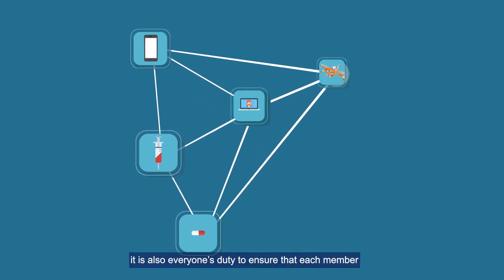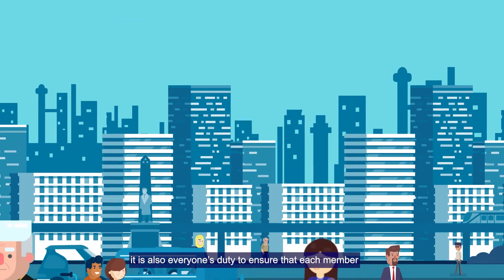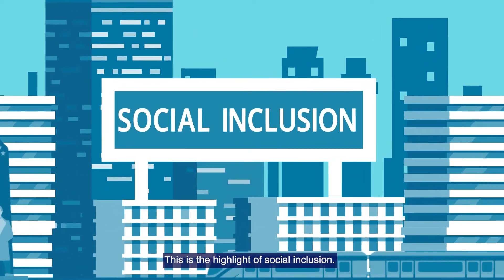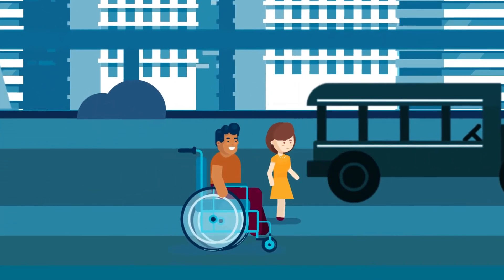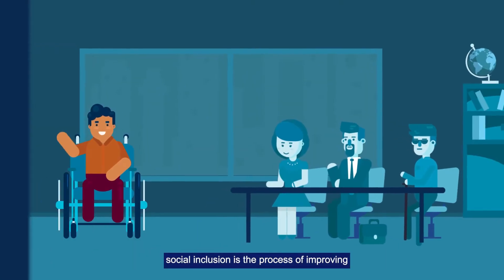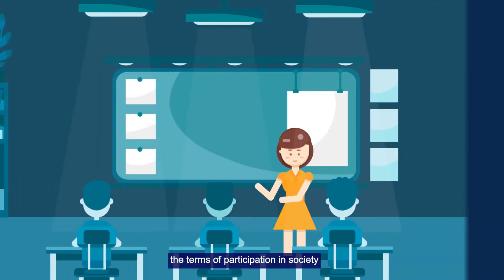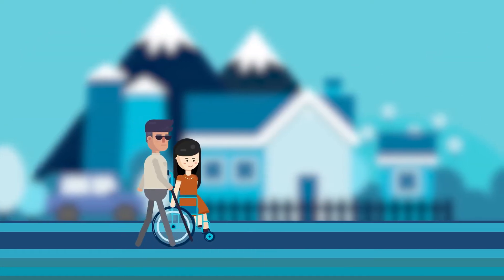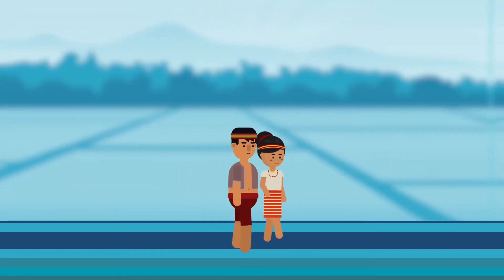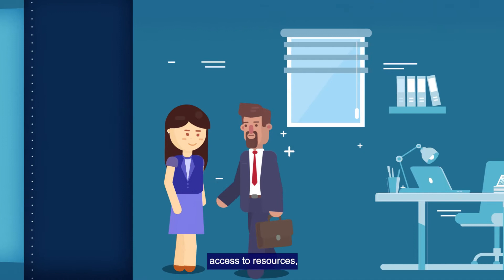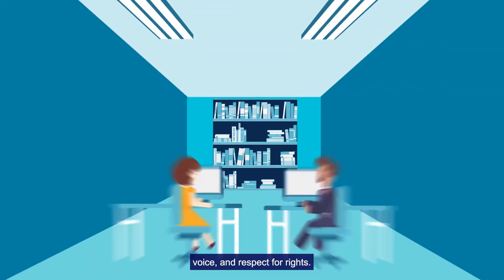As society develops, it is also everyone's duty to ensure that each member benefits from the gains of development. This is the highlight of social inclusion. As defined by the United Nations Economic and Social Affairs, social inclusion is the process of improving the terms of participation in society for people who are disadvantaged on the basis of age, sex, disability, race, ethnicity, origin, religion, or economic or other status through enhanced opportunities, access to resources, voice, and respect for rights.